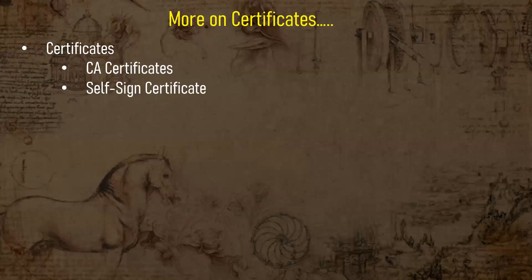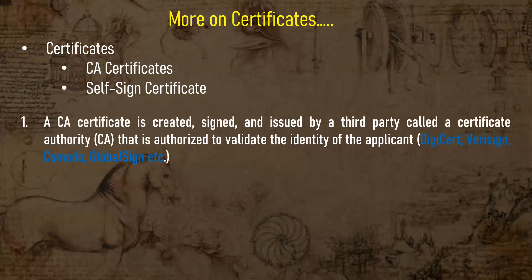The difference between both is that if you go to production with a self-signed certificate, whenever you try to access your website, you will get a security prompt saying this site is not secured. A CA certificate is created, signed, and issued by a third party called a certificate authority, authorized to validate the identity of the applicant. Some well-known CA authorities include DigiCert, VeriSign, Comodo, and GlobalSign.